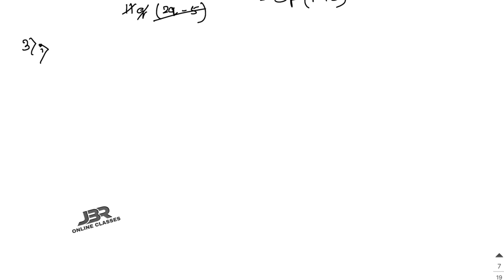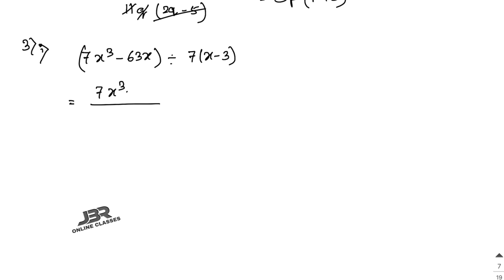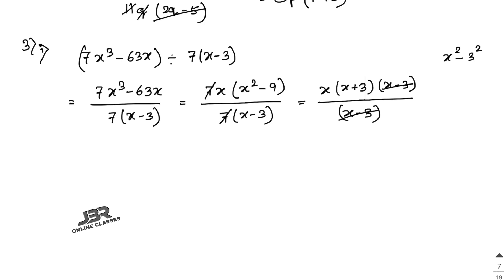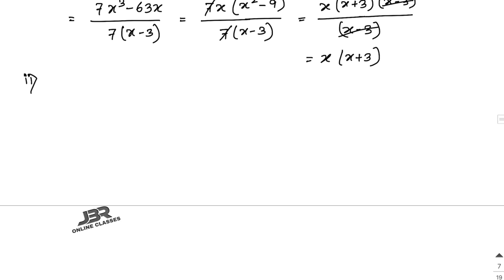Sum number 3, part 1: factorize the expression and divide as directed. (7x³ − 63x) divided by 7(x − 3). Write in fraction form. Factor the numerator: 7x(x² − 9) = 7x(x + 3)(x − 3). The 7 and (x − 3) cancel, giving the final answer x(x + 3).